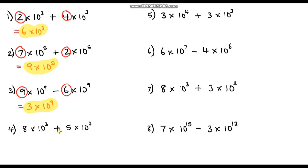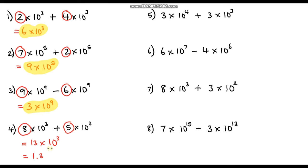Question 4: 8 times 10 to the power 3 plus 5 times 10 to the power 3. Powers are the same, so 8 plus 5 is 13 — giving 13 times 10 to the power 3. However, this is not the final answer. This is not written in standard form — the base number has gone above 10, and it always has to be between 1 and 10. So divide the base by 10 to get 1.3, and multiply the power of 10 by 10 to compensate. Final answer: 1.3 times 10 to the power 4.